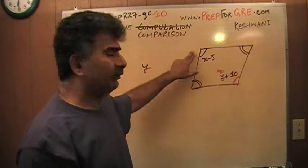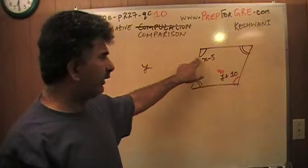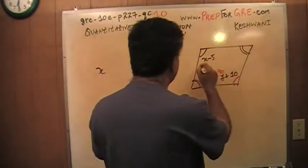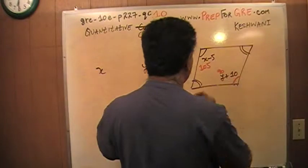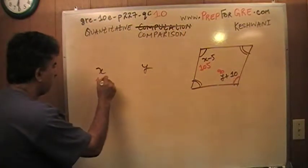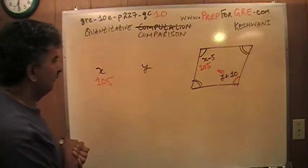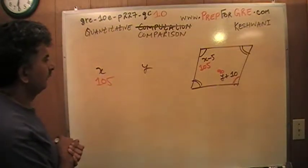This angle is 100, so therefore this angle is also 100. So what number minus 5 will give me 100? Obviously 105. That's it. We're done. X is 105, and Y is 90.